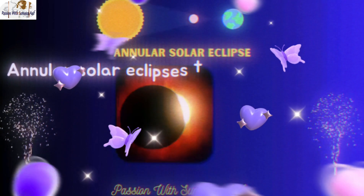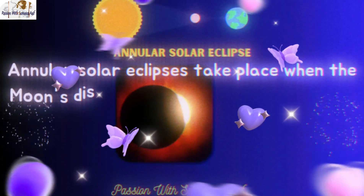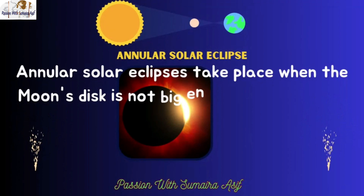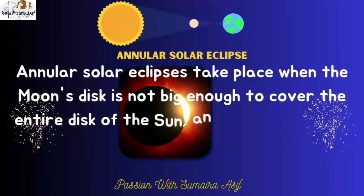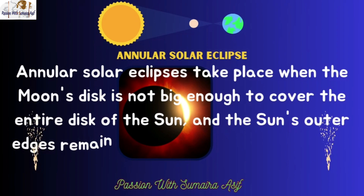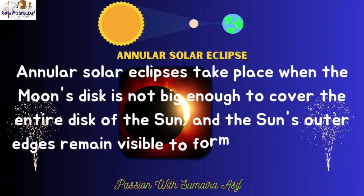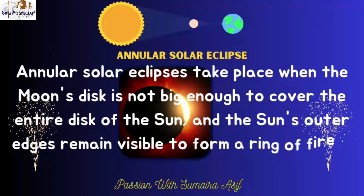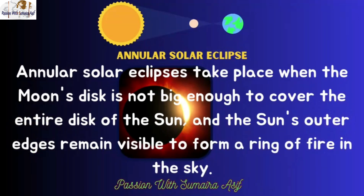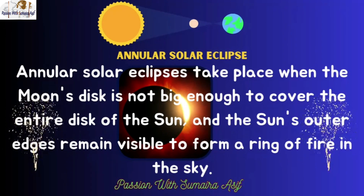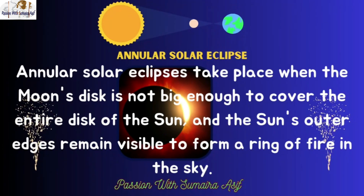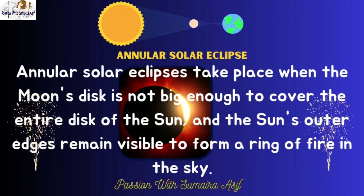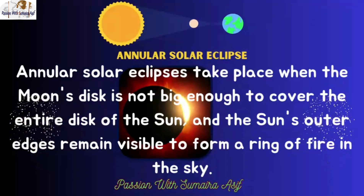An annular solar eclipse takes place when the moon's disk is not big enough to cover the entire disk of the sun, and the sun's outer edges remain visible to form a ring of fire in the sky.